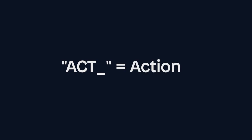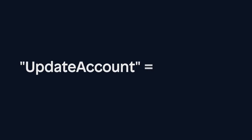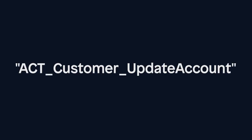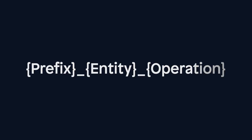Let's start with the basics: naming microflows. Ideally, any microflow which can be triggered by a user should begin with the prefix ACT, which stands for Action. After the prefix, you should add which entity this microflow will affect — for example, Customer. To end it off, we should add a descriptor for the operation being performed on that entity, for example, Update Account. Put it all together and it should look something like this: ACT_Customer_UpdateAccount. The general format for all event microflow names should follow this format: Prefix, Entity, Operation.